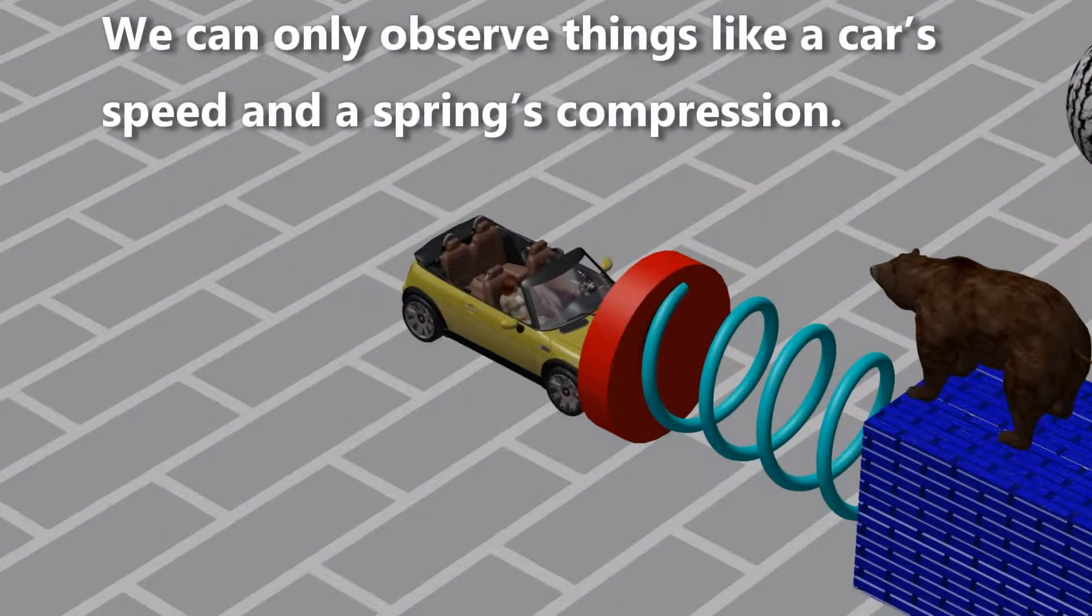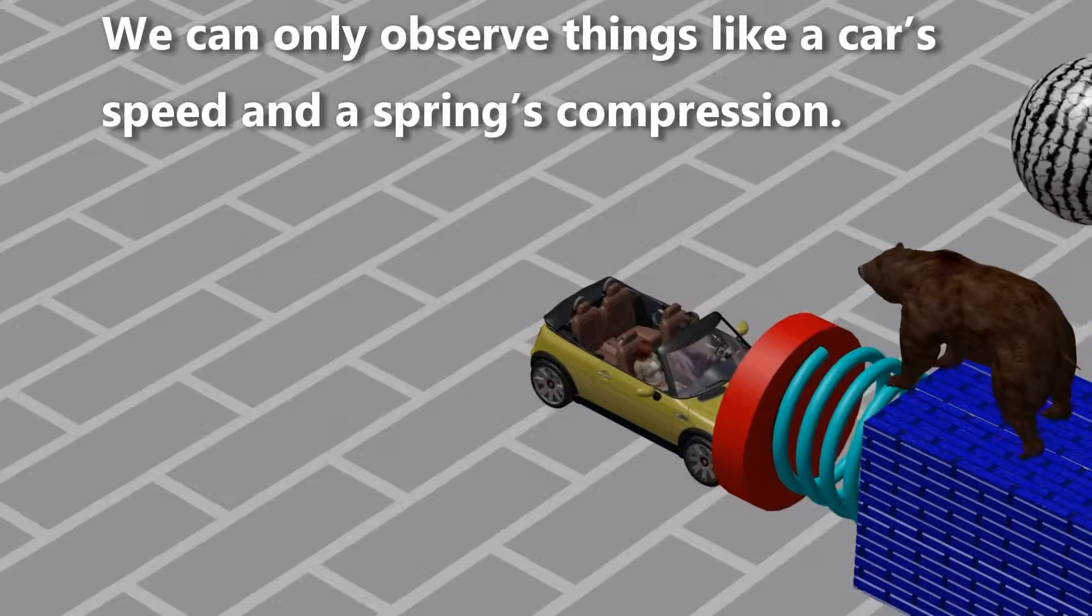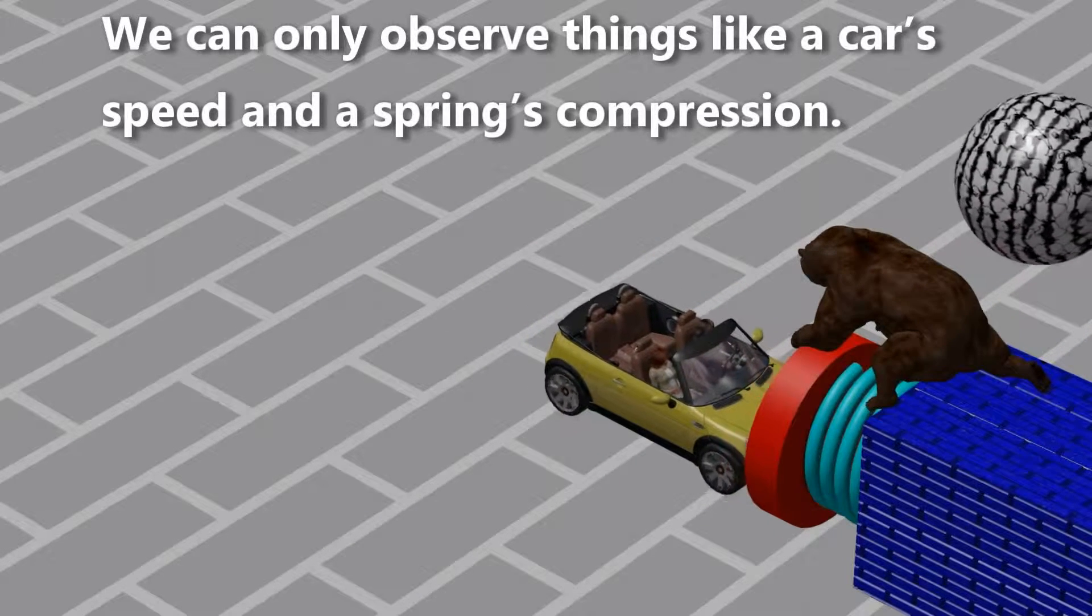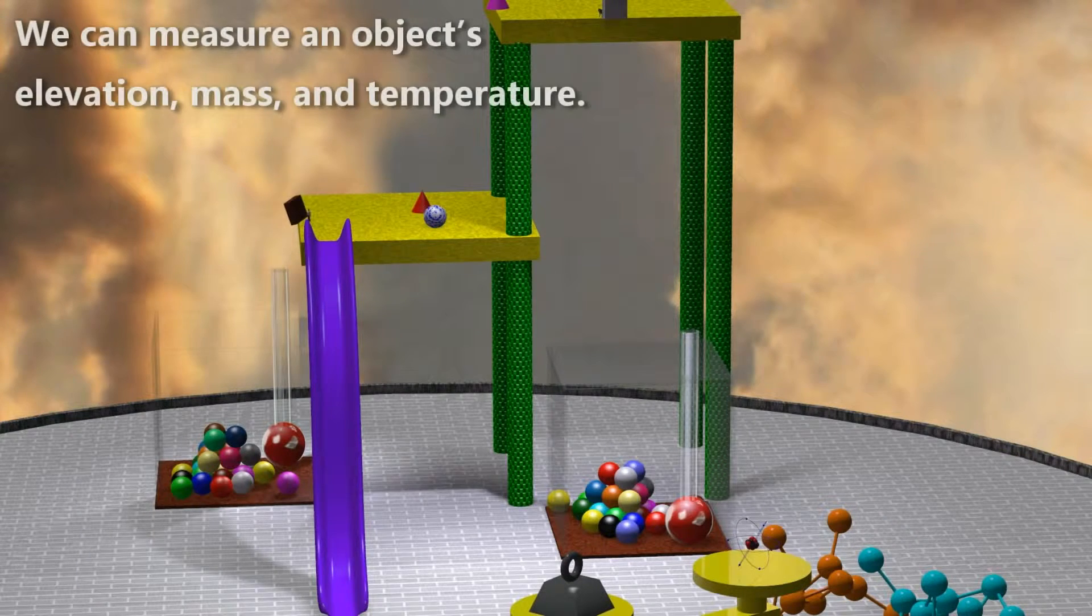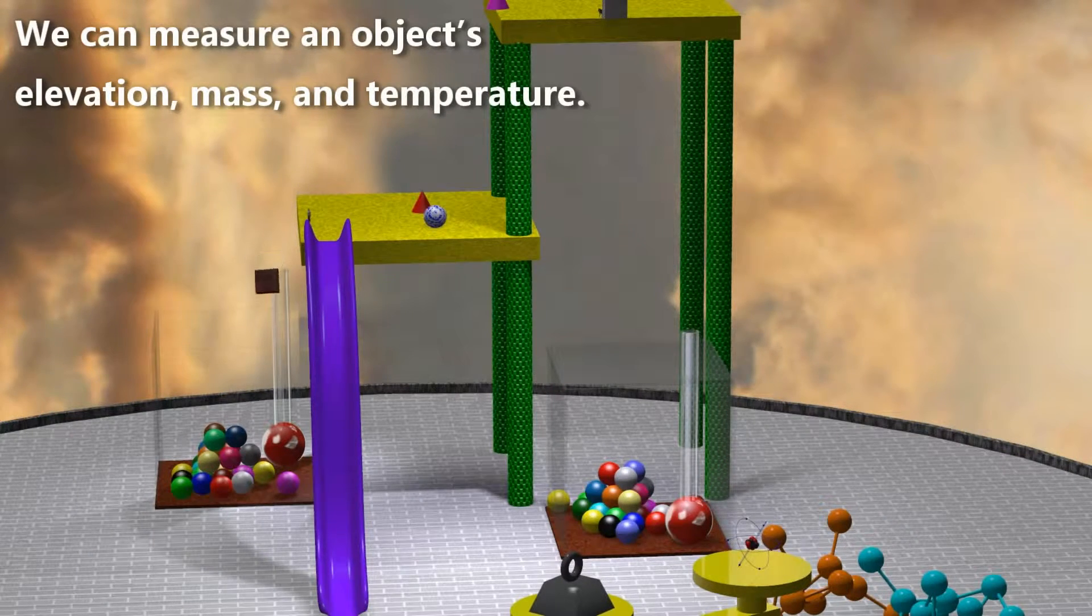We can only observe things like a car's speed and a spring's compression. We can measure an object's elevation, mass, and temperature.